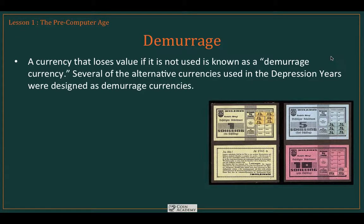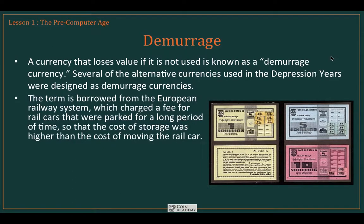Here's an example from Germany showing three different notes — the one shilling, five shilling, and ten shilling notes. Notice the stamps on those notes. When the original note was issued, there would be no stamps on it. But if that note was not spent within a certain period of time, it would decrease in value. To keep the value, you would have to go out and purchase one of these stamps, equal to a fraction of the note's value, and stick it on the note. This promoted you to use the note quickly, because it actually cost you money to hold it.